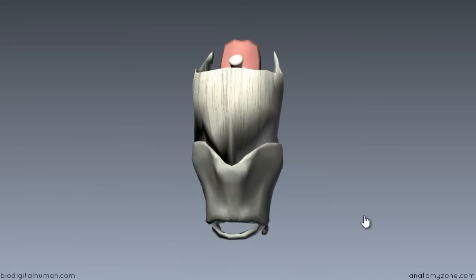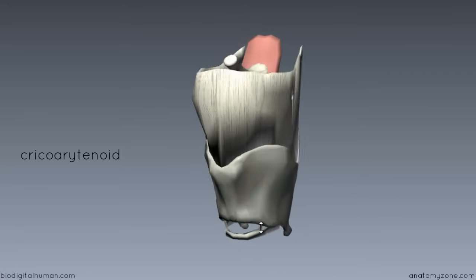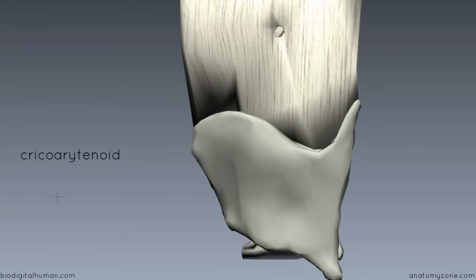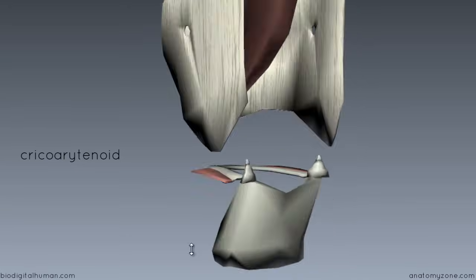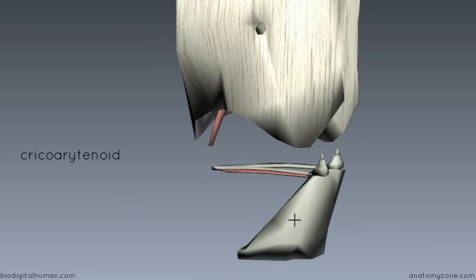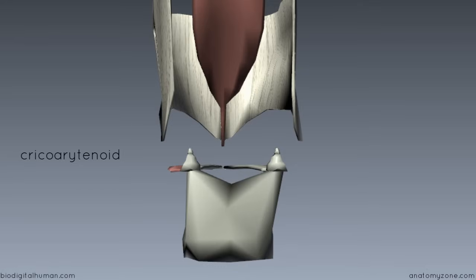Next we're going to look at some muscles which attach the cricoid cartilage to the arytenoid cartilage — you can guess what these are called: the cricoarytenoid muscles. If I rotate the larynx around to the back and remove the thyroid cartilage temporarily, we've got muscles sitting on the posterior and upper parts of the cricoid arch. These are called the posterior cricoarytenoid muscles and the lateral cricoarytenoid muscles, which have different functions.